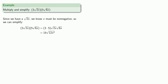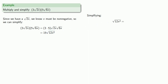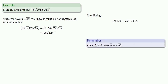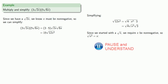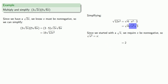Let's simplify the square root of 12x squared by isolating perfect square factors. 12 is 4 times 3, and x squared is a perfect square. The square root of a product is the product of the square roots, so we can rewrite this. Since x must be non-negative, the square root of x squared is just x. So square root of 4 is 2, square root of x squared is x, and square root of 3 we're stuck with. We finish by multiplying out the coefficients.